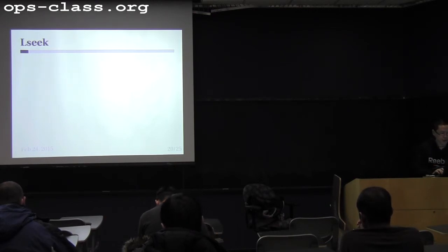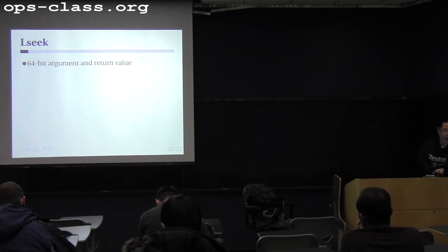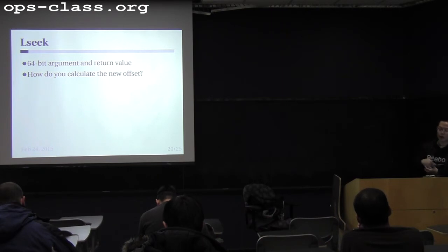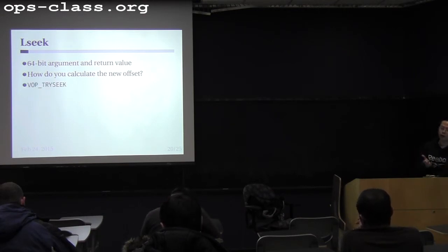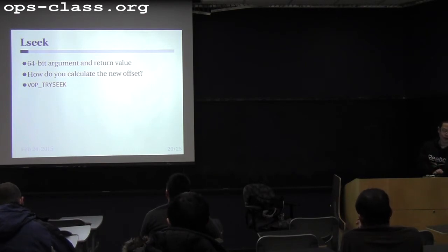For lseek, the tricky part is the 64-bit argument parsing, which we talked about last time. Also, calculating the new offset — read the manual for what each whence value means. Use VOP_TRYSEEK to determine if the seek target is valid.